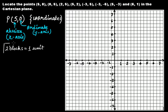In your examination, you'll be asked in terms of centimeters or inches, but for our discussion we are taking two blocks equal to one unit. Now, the abscissa in this case is five, so you have to count five units on the x-axis: one unit, two unit, three unit, four unit, and five unit — that comes here.